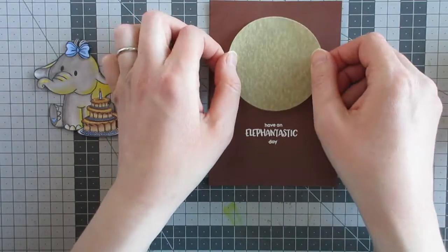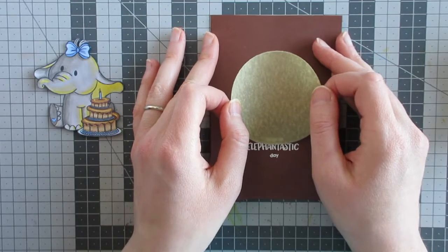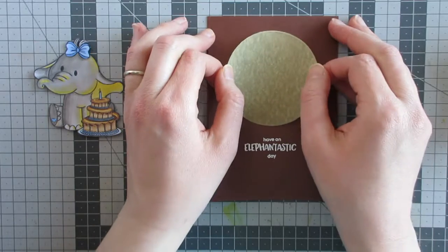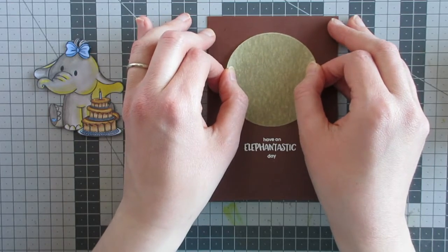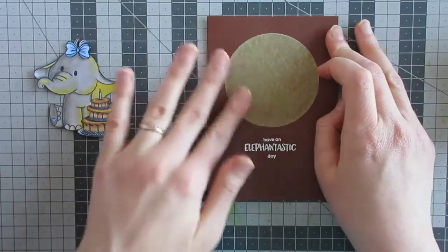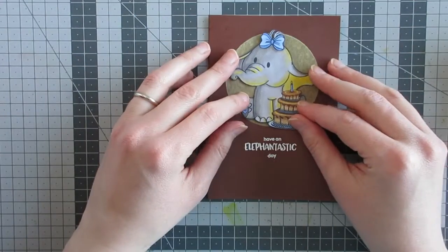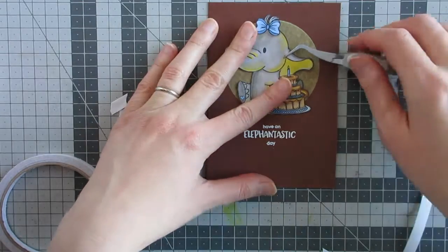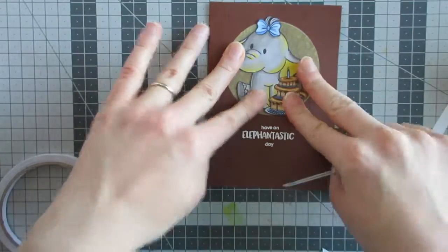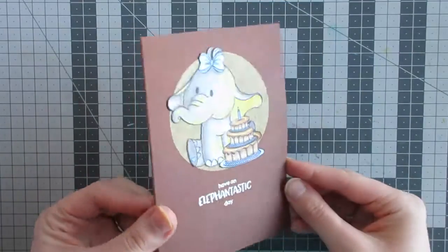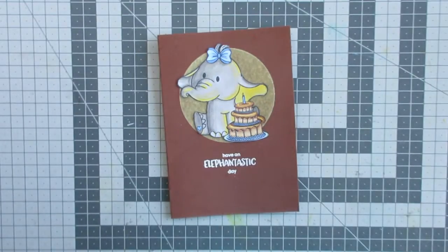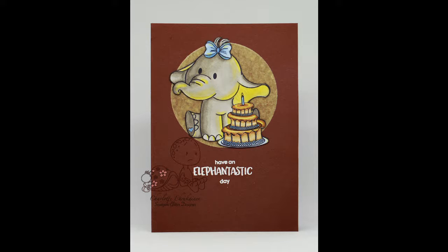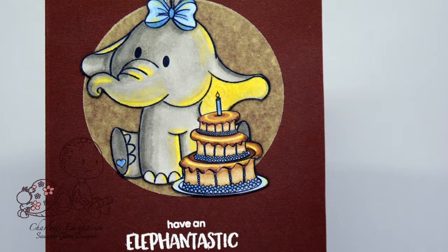So I'm using a dark brown card base and I've white heat embossed my sentiment onto it, and then I'm adding a circle of yellow vellum to go behind the elephant. And then I have adhered the elephant down with double-sided tape and a little glue pen on the fiddlier areas. And that completes my elephant card. I hope you liked it.